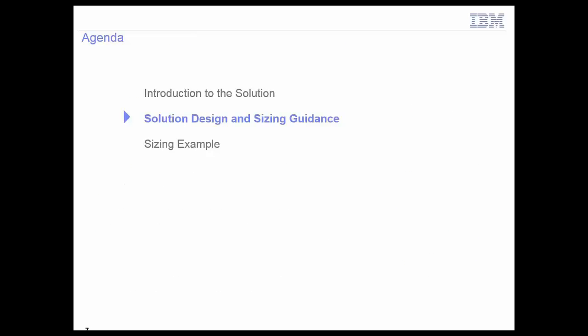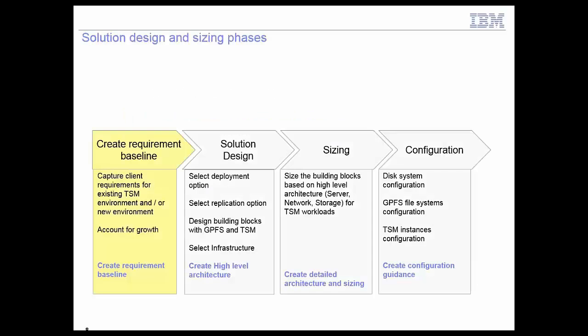Now let's look at the solution. I've broken down the solution design and sizing into four phases. The first is to create a client requirement baseline — capture requirements from the client, account for growth, and create a requirement baseline. The next phase is solution design based on those requirements. After we have a high-level solution architecture, we do the sizing of the components, and at the end we have some configuration guidance for that solution.